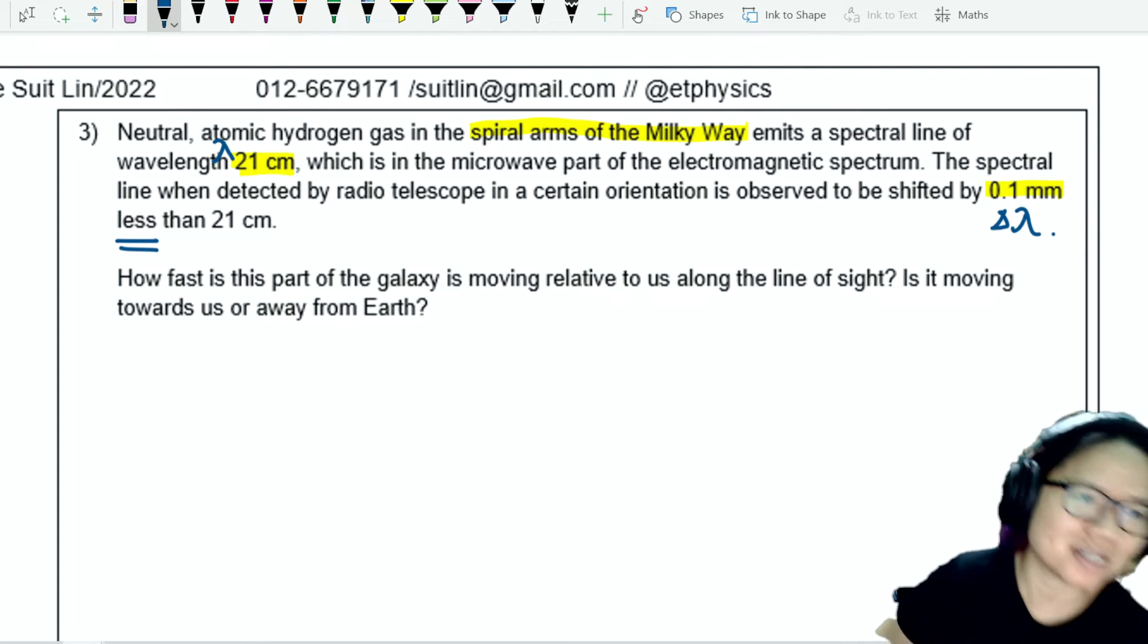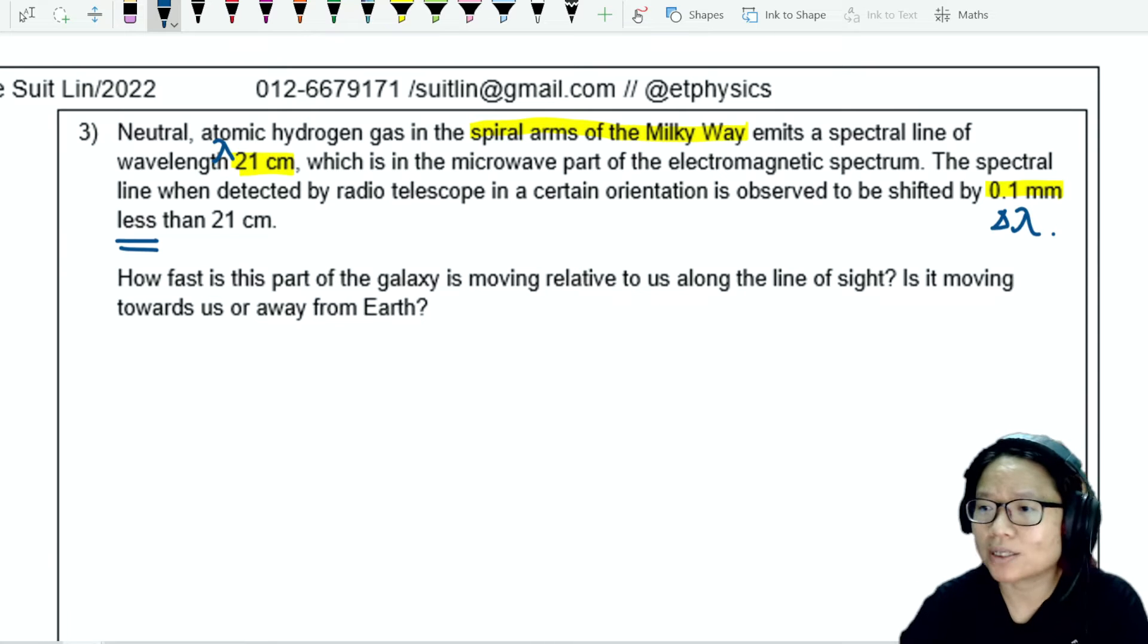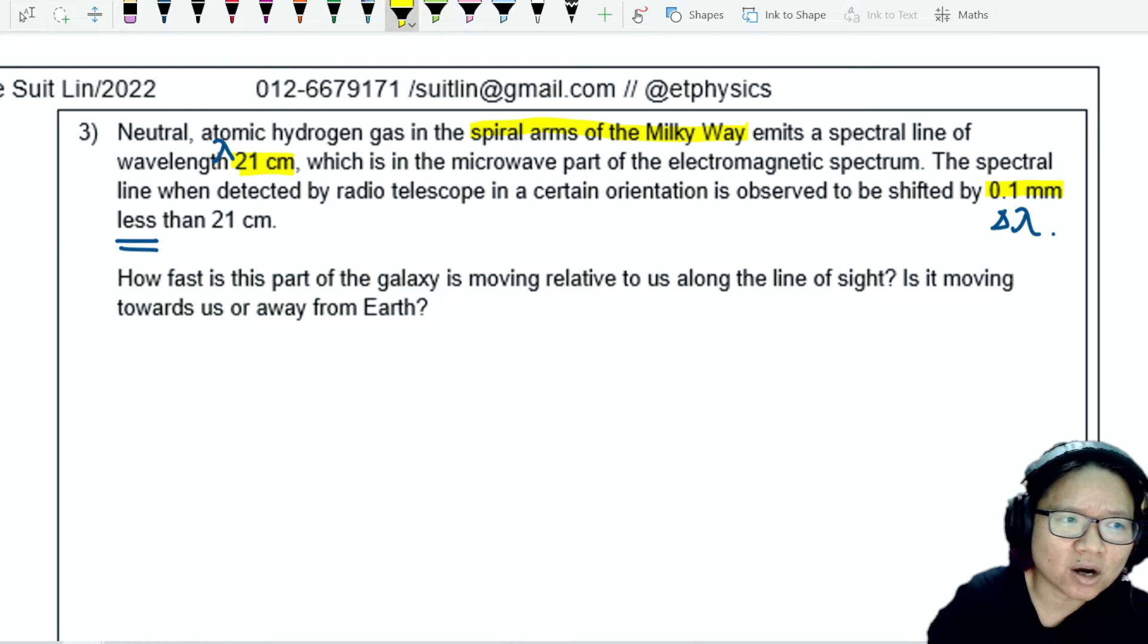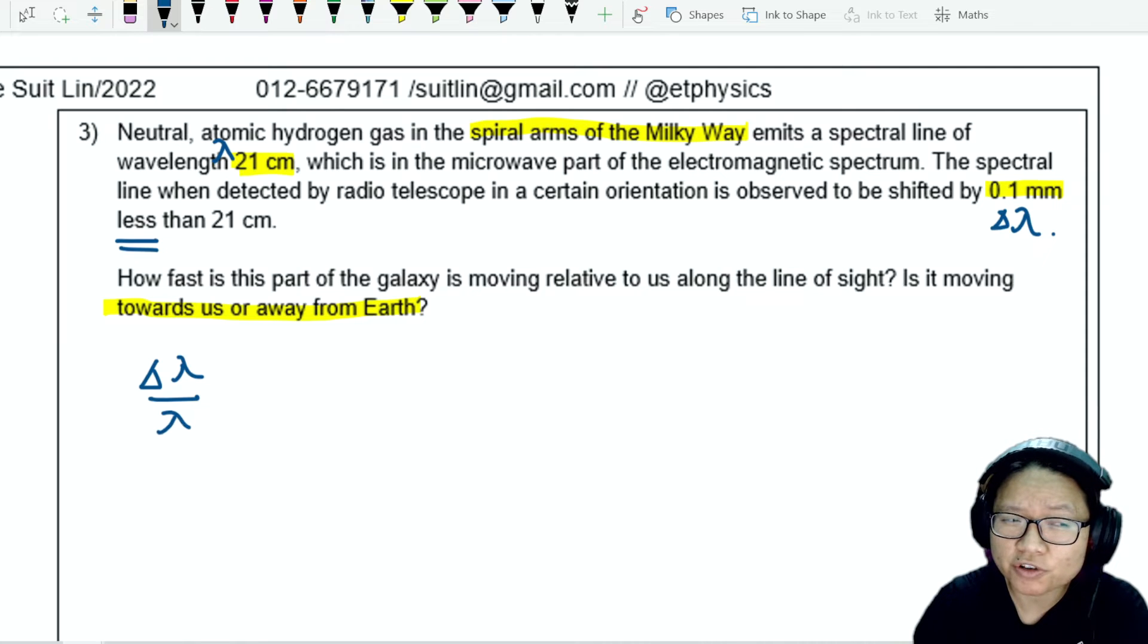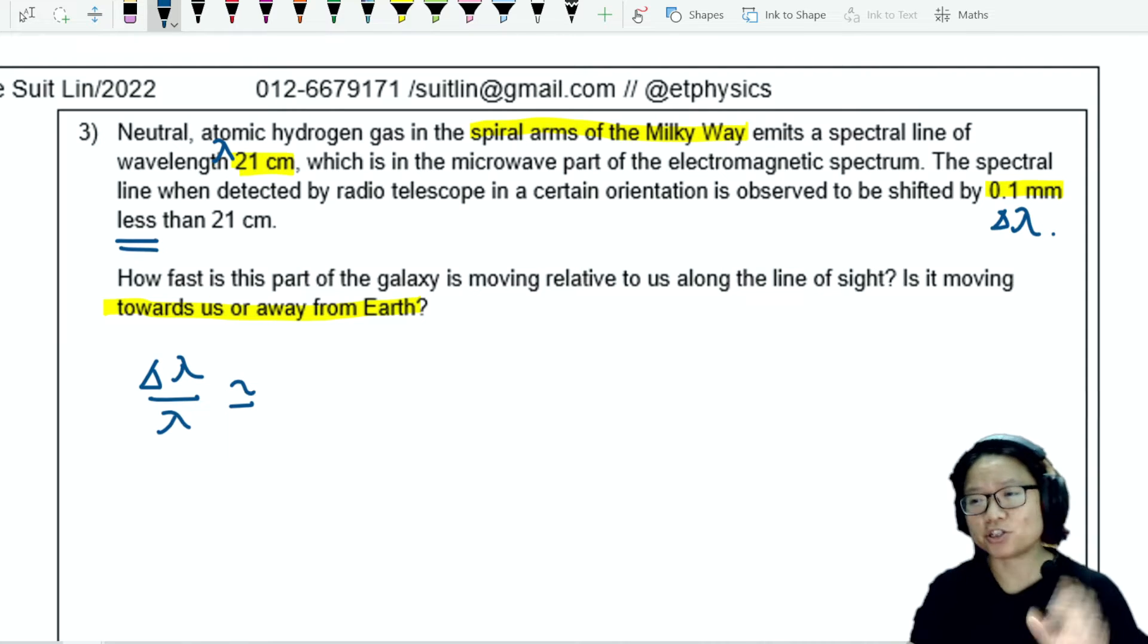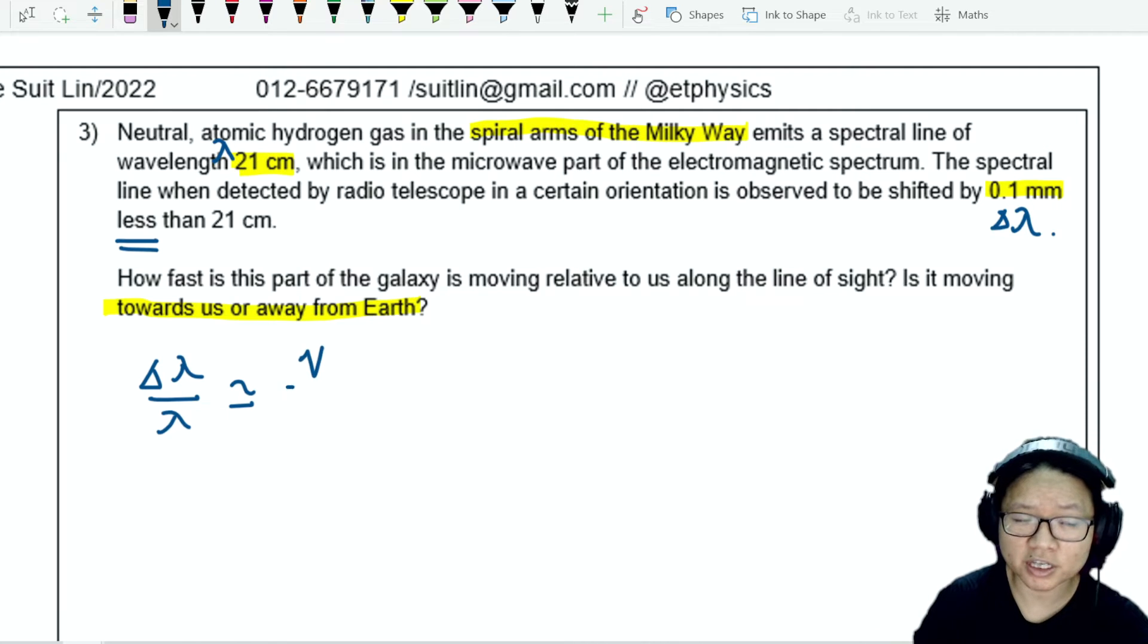How fast is this part of the galaxy moving relative to us along the line of sight, and is it moving towards us or away from Earth? We can pull up the Doppler shift equation where the shift in wavelength over the original wavelength is the recession velocity over the speed of light.